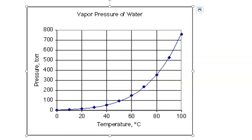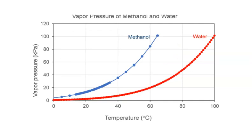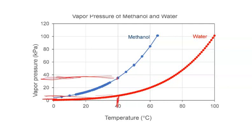If we graph both water and methanol on the same chart, we can see a pattern: they're both exponential, but methanol is less sticky to itself and has a higher vapor pressure at any given temperature. At 20°C, water's vapor pressure is barely above zero, while methanol's is around 10. At 40°C, water is around 7, but methanol is around 37 or 38.